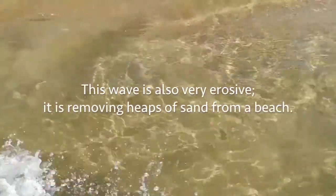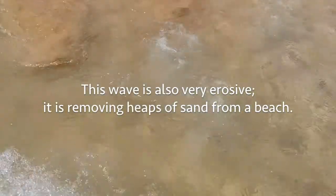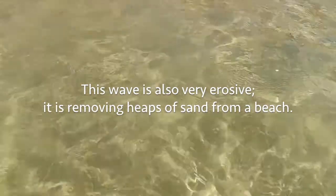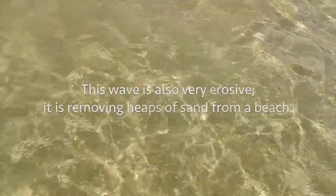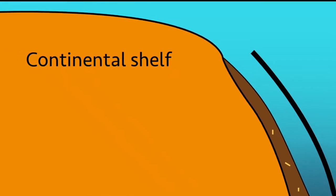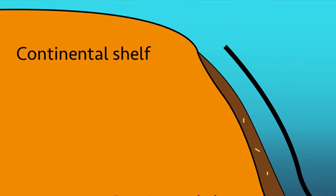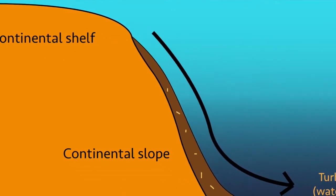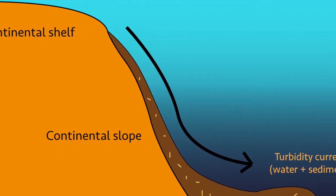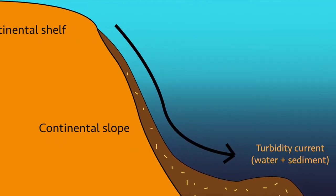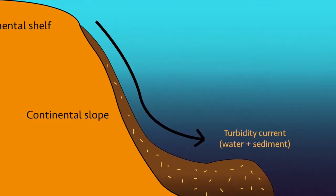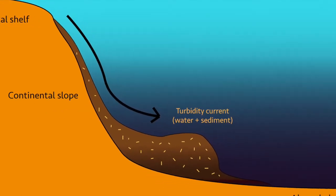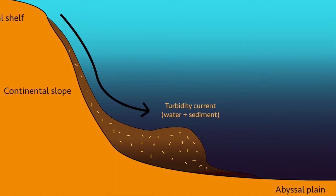Early on, the current is extremely erosive. It strips sand, silt, coral and other material from the sea floor. A small turbidity current might run out of energy and dissipate while it is still on the continental shelf. If it has enough energy, however, it will shoot over the continental shelf and down into the abyss, perhaps 4km deep. This is actually how most of the sediment on the abyssal plain gets there.